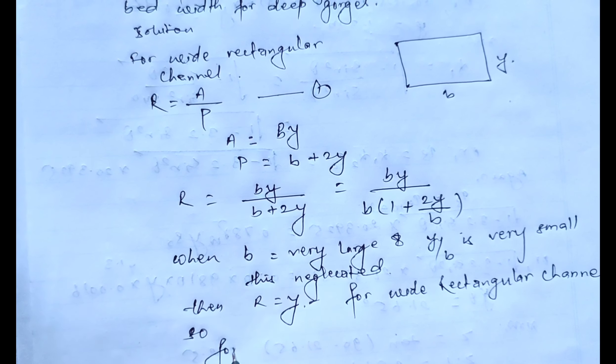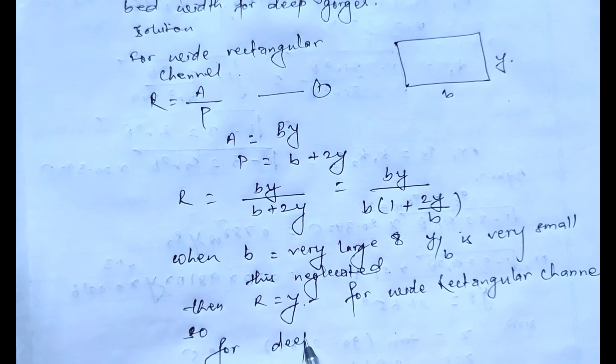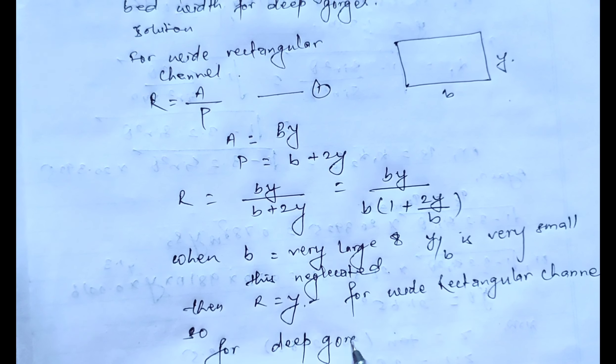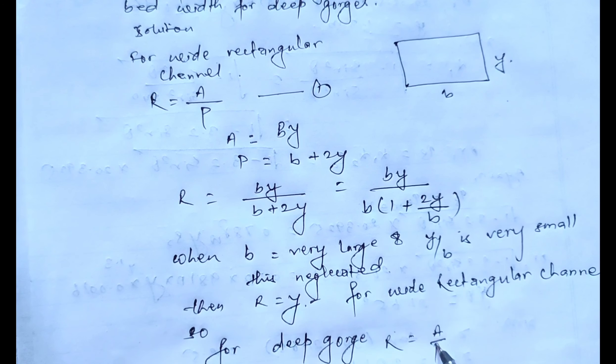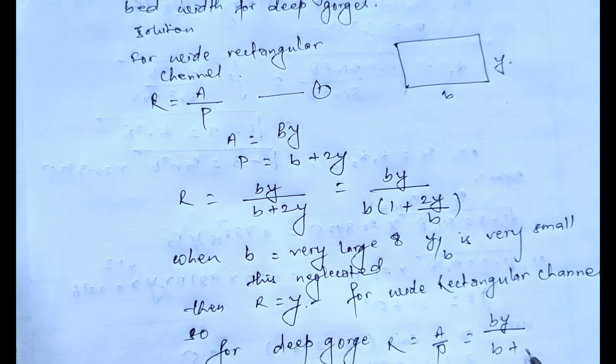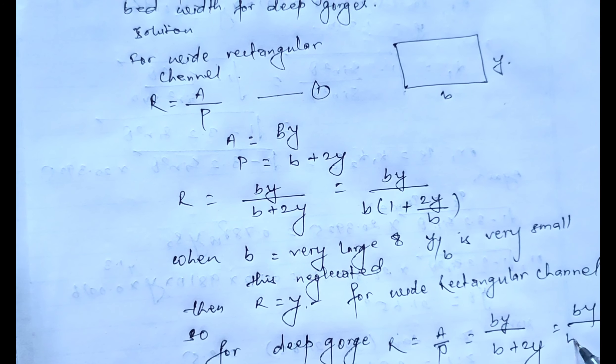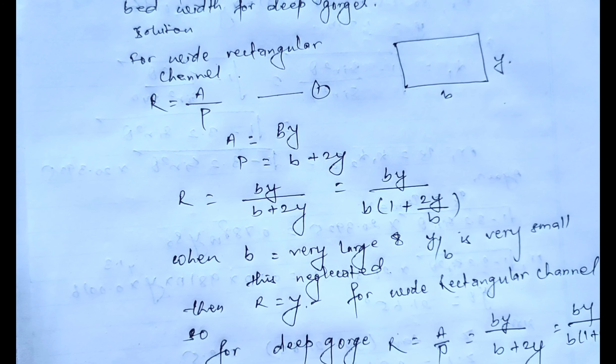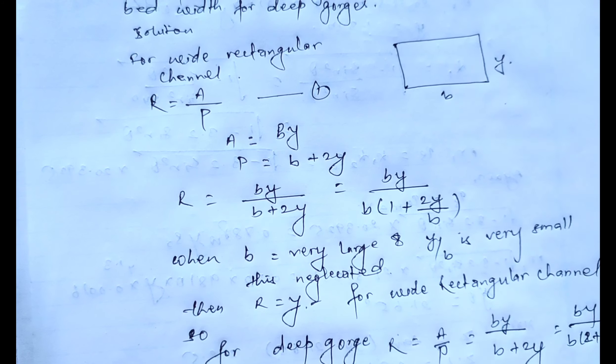So for deep gorges, R equals A by P equals BY divided by B plus 2Y equals BY divided by 2 times 1 plus B by 2Y.